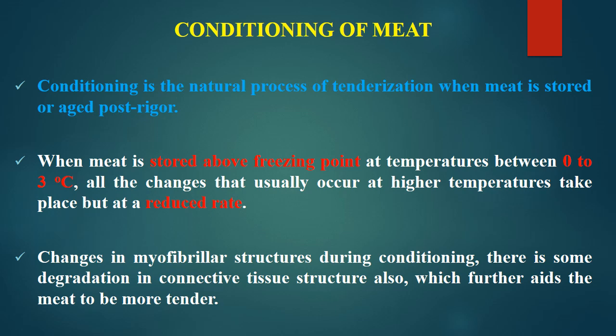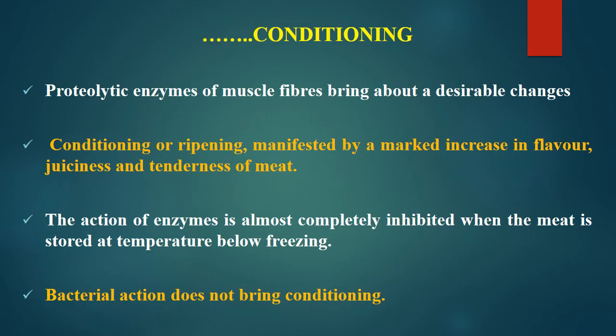During conditioning, there are changes in myofibrillar structure, and also some degradation of connective tissue structure which further aids tenderness. Proteolytic enzymes of muscle fibers bring about desirable changes — these enzymes come from CASF or from lysosomes as catheptic enzymes. This conditioning, also called ripening or aging, is manifested by a marked increase in flavor, juiciness, and tenderness of meat. The action of these enzymes is almost completely inhibited when meat is stored below freezing, and bacterial enzymes do not bring about conditioning.